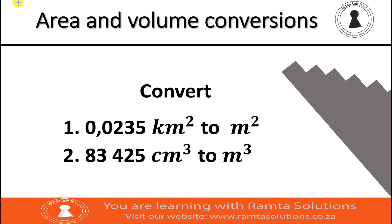Okay, so without any waste of time, let's look at what we are doing. We are converting 0.0235 square kilometers to square meters, and we will then convert 83,425 cubic centimeters to cubic meters. Now let's get working.